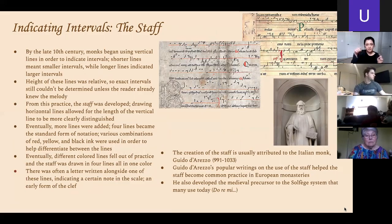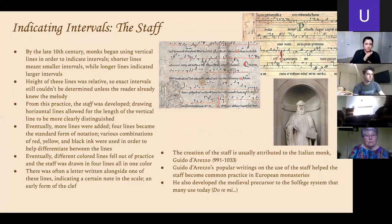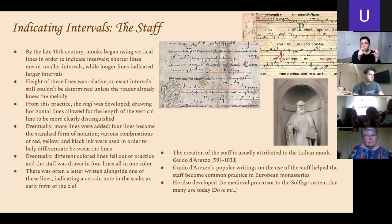The next development: they had all these lines, dashes, and symbols, but those don't really tell you the exact intervals. So they started to get more specific. The best way they did that was by developing the staff. By the late 10th century, they began using vertical lines — before, there were arbitrary little dashes, but now totally vertical lines indicated intervals. A shorter line meant a smaller interval, and a longer one meant a larger interval. But the lengths of these lines were not standardized, so you still couldn't know exactly — two short lines could mean an interval of a second in one case and a third in another.